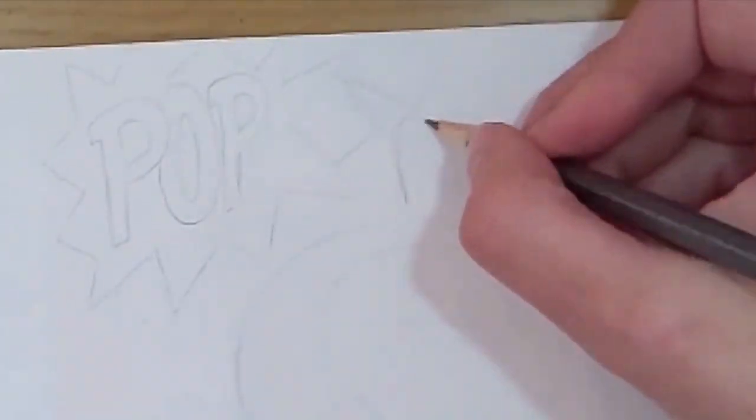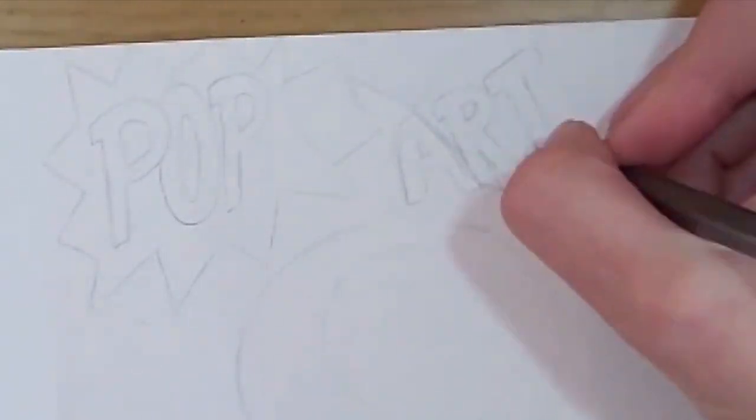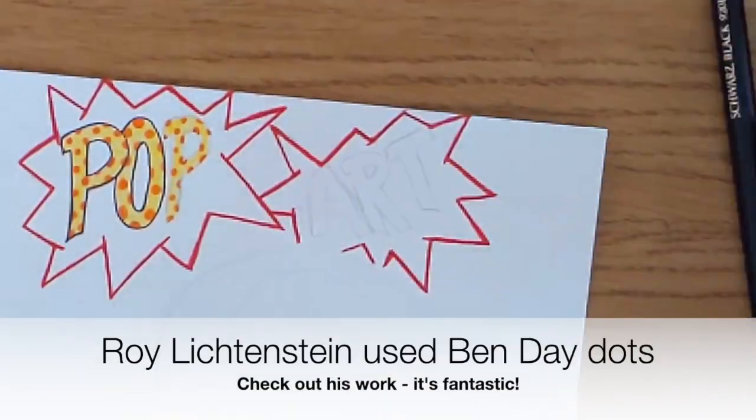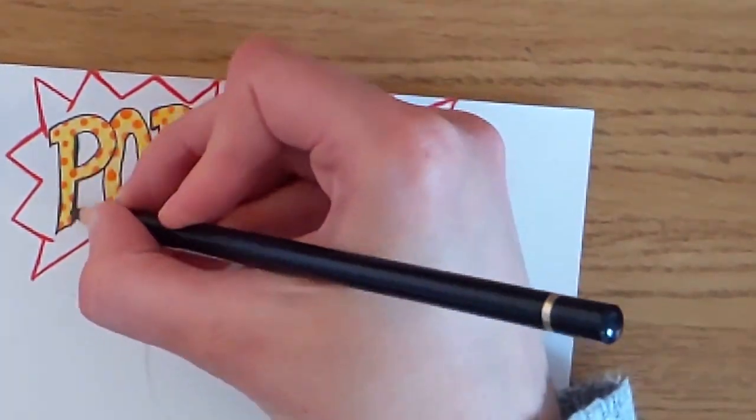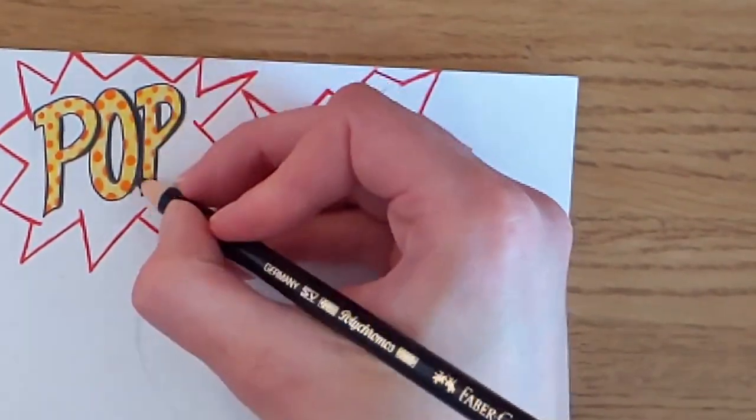You need to sketch in your title and then add color or different tones. Here I'm adding orange bandaid dots on top of the title and adding shadows to make the word pop out of the page.